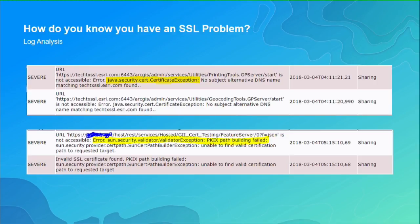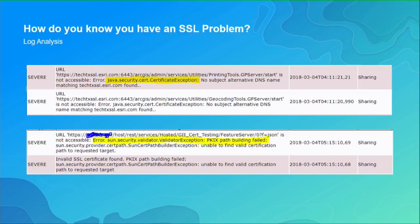Identifying SSL problems in ArcGIS Enterprise: SSL errors don't always present obviously. The best place to look is the Portal logs in the Portal Admin endpoint. Key log indicators of SSL trust problems include: 'java.security.cert.CertificateException' and 'PKIX path building failed.' These messages signal a trust chain problem and should prompt you to review your imported certificates.